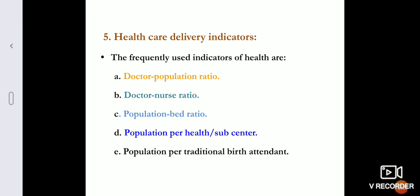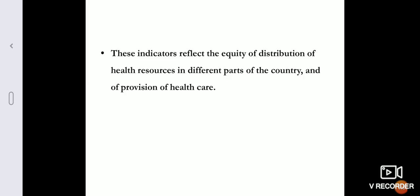Health care delivery indicators are measured by the doctor-population ratio, dentist-population ratio, and doctor-nurse ratio, as well as population-to-beds ratio. During the COVID situation, for instance, we needed to assess how many beds, how much manpower, and how much health infrastructure was available. These indicators reflect the equity of distribution of health resources in different parts of the country and how health care services are being provided to the people.